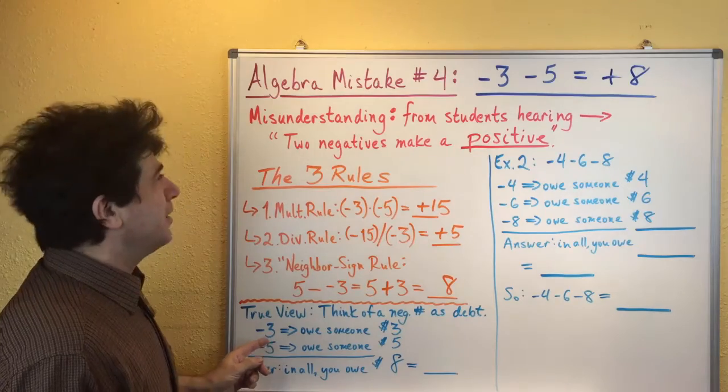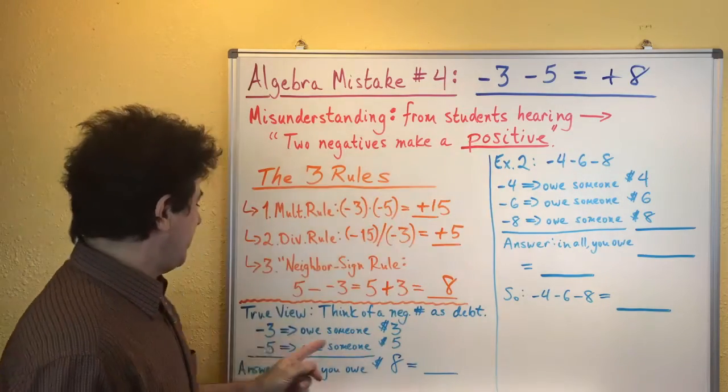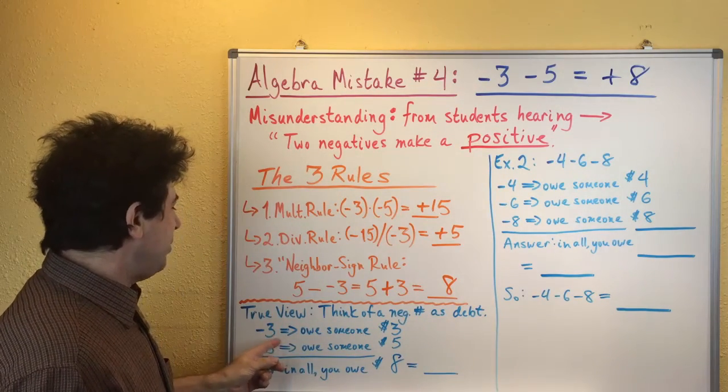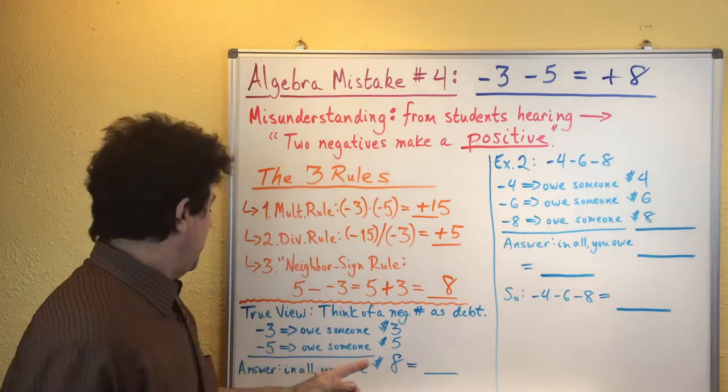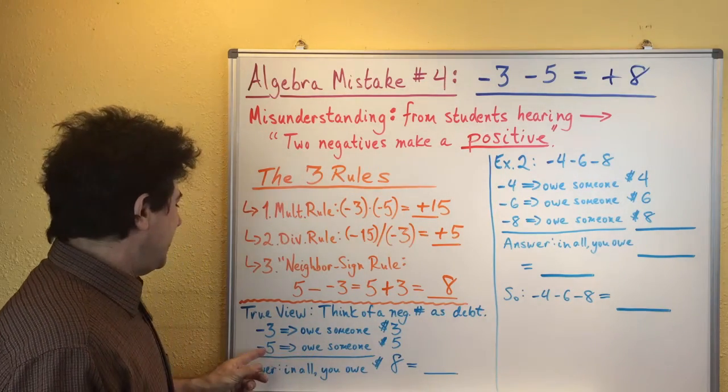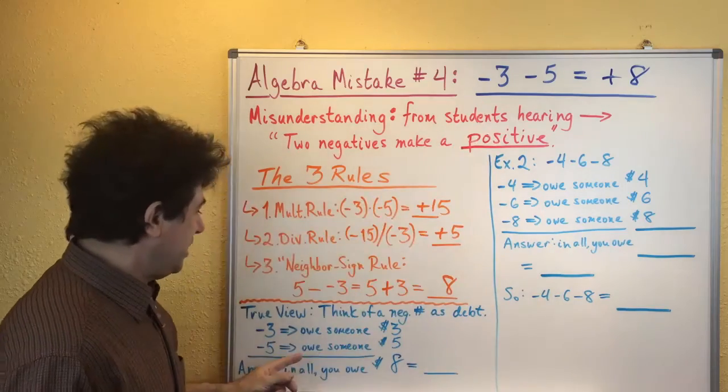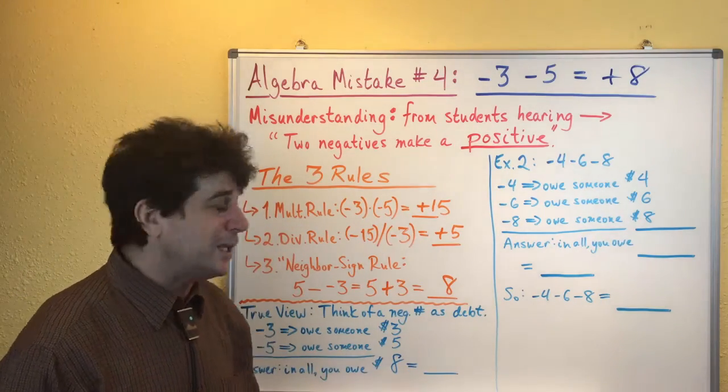Okay, so here's what I mean. If we take the negative three from this problem and we think of it like a debt, that would mean that we owe somebody three dollars, right? Because debt means we owe. And the negative five of the problem would mean that we owe somebody five dollars, possibly somebody else.